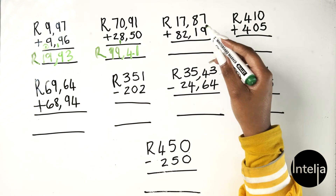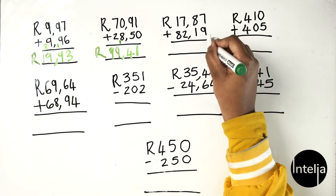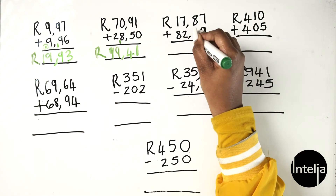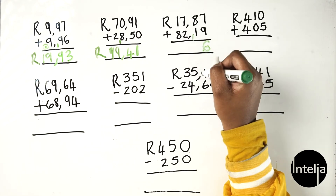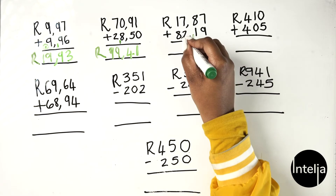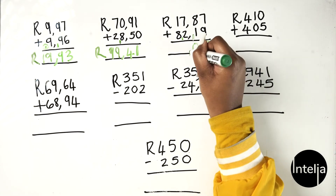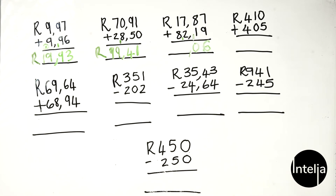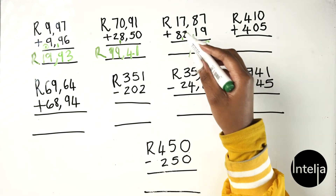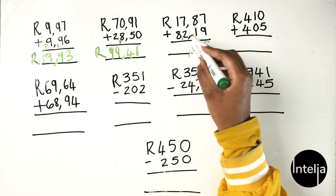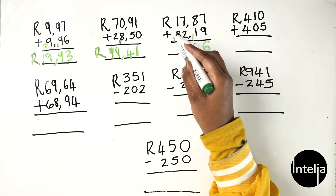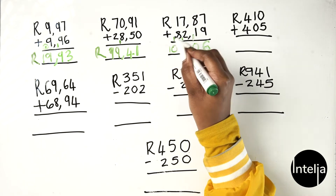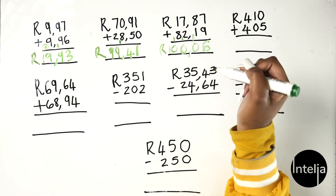Moving on to the third: 7 plus 9 gives you 16 — write down your 6, carry the 1. Then 8 plus 1 is 9, plus the carried 1 is 10 — write down your 0 and carry the 1. Don't forget your comma to separate the rands from the cents. Then 7 plus 2 is 9, plus the carried 1 is 10 — write down 0, carry 1. Then 1 plus 8 is 9, plus 1 is 10. So your answer is 100 rands and 6 cents.